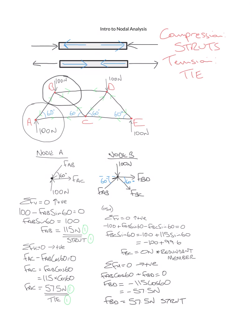You could then keep going around the members — doing node E next to get DE and CE, then node D to get CD. But generally the SQA will ask you to do two nodes to demonstrate the skill without repeating it over and over again.